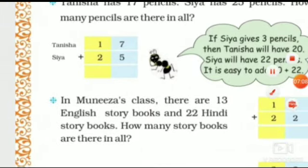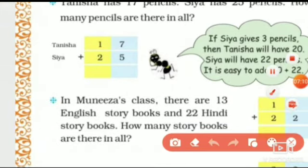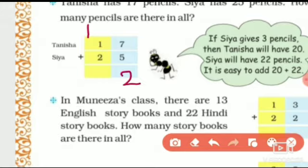So here 7 plus 5 is 12. We will write 2 here and 1 carry over. Now add next: 2 plus 1 is 3 and 3 plus 1 is 4. So the total is 42. So how many pencils are there in all? There are 42 pencils altogether.